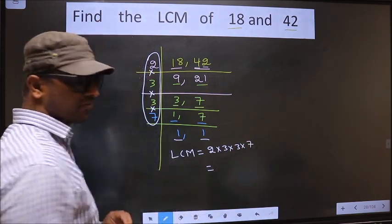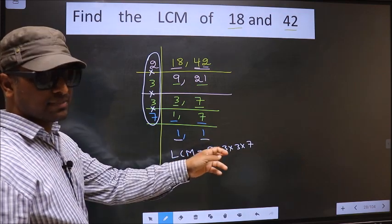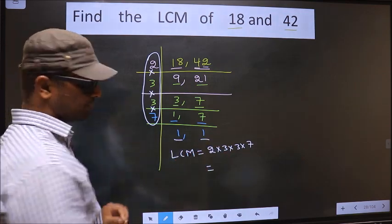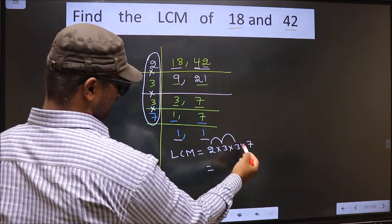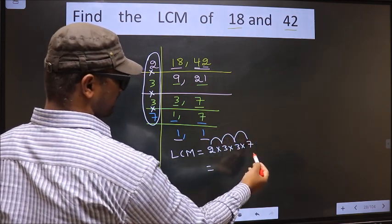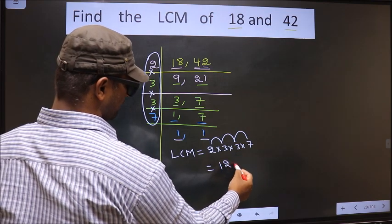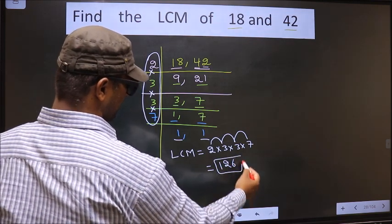Now let us multiply these numbers. That is 2 into 3, 6 into 3, 18 into 7, 126 is our LCM.